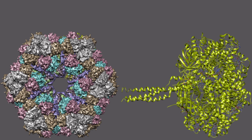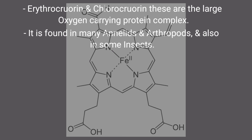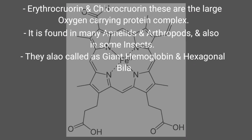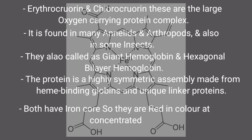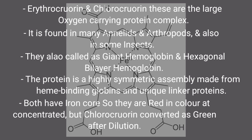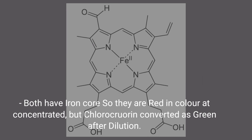The third respiratory pigment is erythrochlorine and chlorochlorine. These are large oxygen-carrying protein complexes found in many annelids and arthropods, and also in some insects. They are also called giant hemoglobin and hexagonal bilayer hemoglobin. The protein is a highly symmetric assembly made from heme-binding globins and unique linker proteins. Both have iron cores, so they are red in color when concentrated, but chlorochlorine converts to green after dilution.